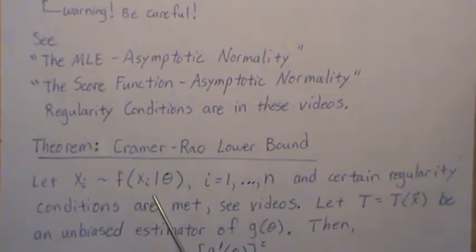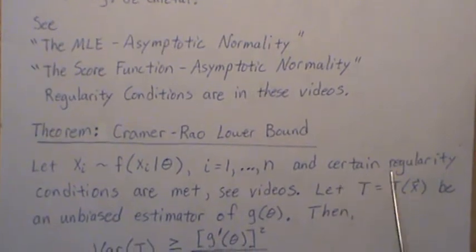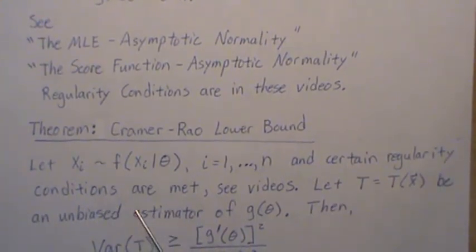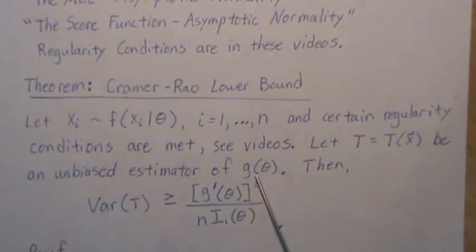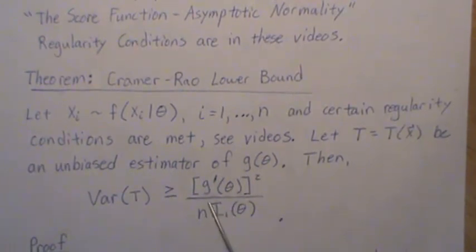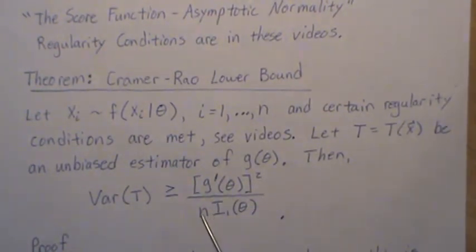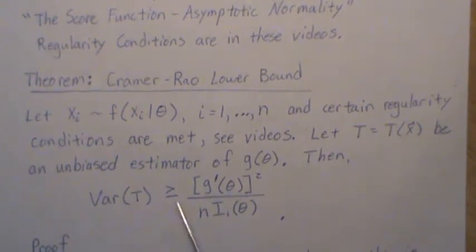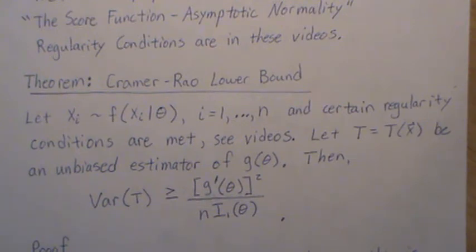So here's the theorem. So let Xi be distributed with this distribution. We're taking a sample size N. And we're assuming that these regularity conditions are met. And again, see the videos. Now, let T be an unbiased estimator of this function g of theta. Then the variance associated with our estimator has to be greater or equal to this number here. And I say number because there's no randomness in here. Once we take a sample size N, N is fixed. The unknown parameter is fixed. So this is a number. So any unbiased estimator has to be greater than or equal to this. And so if we can find an unbiased estimator that has a variance equal to this lower bound, you know that we have the best estimator.